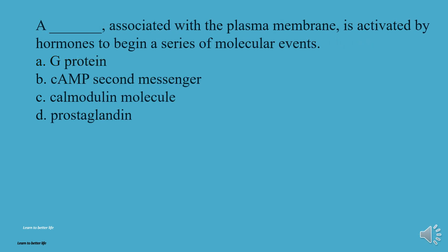A what, associated with the plasma membrane, is activated by hormones to begin a series of molecular events? A, G-protein. B, cAMP 2nd messenger. C, Calmodulin molecule. D, Prostaglandin. The answer is A, G-protein.